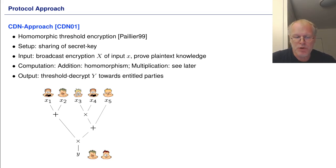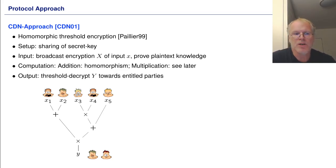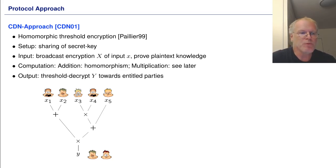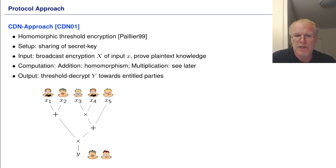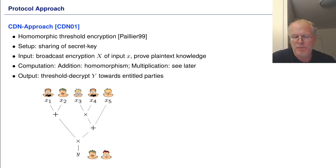We follow the CDN approach, which means that we assume a homomorphic threshold encryption scheme and the secret key of that scheme is initially shared among the parties. In order to provide an input to the computation, the party would encrypt the input, send the encryption to everybody, and prove plaintext knowledge. Addition is for free by exploiting the homomorphism of the encryption scheme, and for multiplication we employ some sub-protocol.